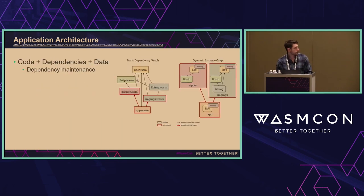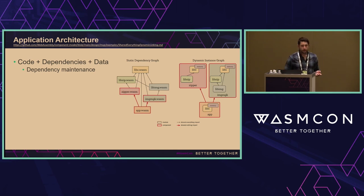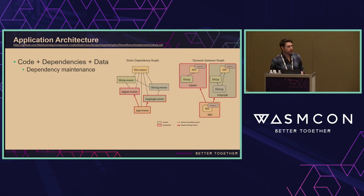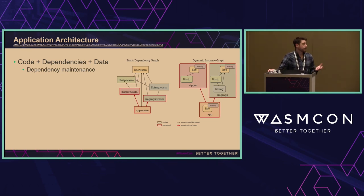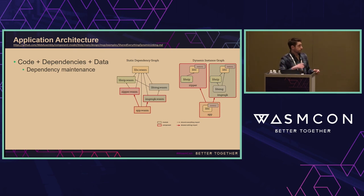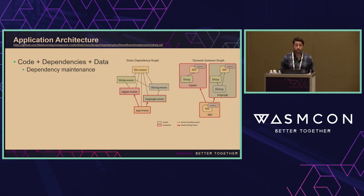This leads to dependency maintenance problems. This graph from the component model repo illustrates 'shared everything dynamic linking.' When you've got an application DAG of dependencies, you typically have to statically compile all of those together. If you've got dependencies on dependencies — maybe 10 different versions of libc pulled in — that's bad. This re-architecting of WebAssembly allows sharing modules, each with their own linear memory, within specific components and capabilities for your application.